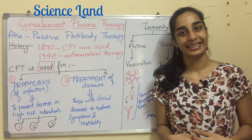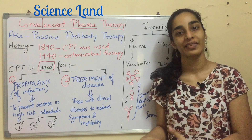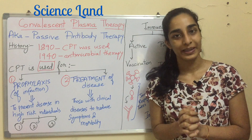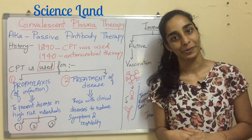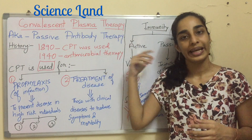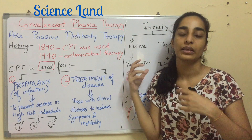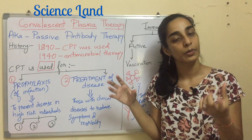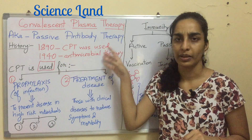Hello friends, welcome to Science Land. I am Nikita and today we are going to talk about convalescent plasma therapy. Convalescent plasma therapy is the treatment by using the plasma — the liquid portion of the blood — which has antibodies. It is also known as passive antibody therapy.